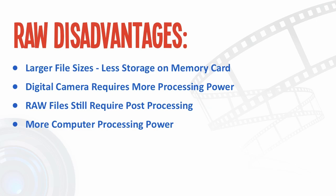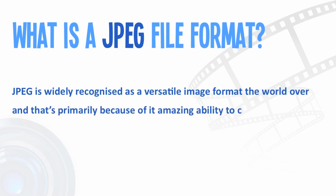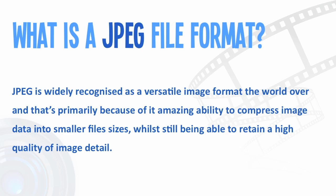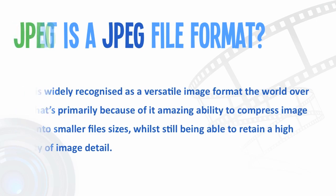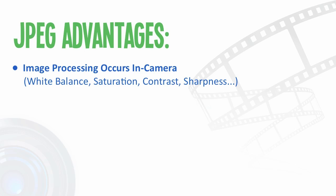So what is a JPEG file format? JPEG is widely recognised as the versatile image format the world over, primarily because of its amazing ability to compress image data into smaller file sizes while still retaining high quality image detail. A JPEG file contains less data than RAW — how much depends on the compression and quality settings configured in-camera. The primary advantage of shooting in JPEG is that all image processing occurs in-camera, meaning you don't have to edit your photos if you don't want to. You can set the white balance, saturation, contrast, sharpening, resolution and file size all from within the camera.